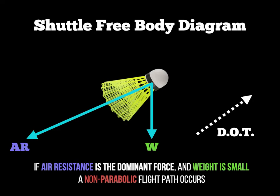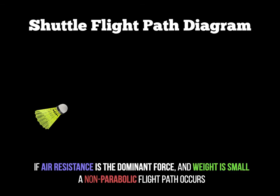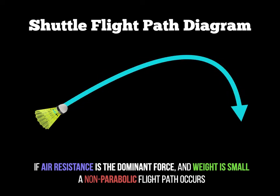Since air resistance is greater than weight, the shuttlecock has a non-parabolic flight path — it doesn't follow the same flight path as a shot put. When you hit a shuttle it travels fast and then drops very quickly. So we draw a non-parabolic flight path to reflect this. Remember the examiner can ask you to do other objects as well, but these are the ones that just require air resistance and weight.